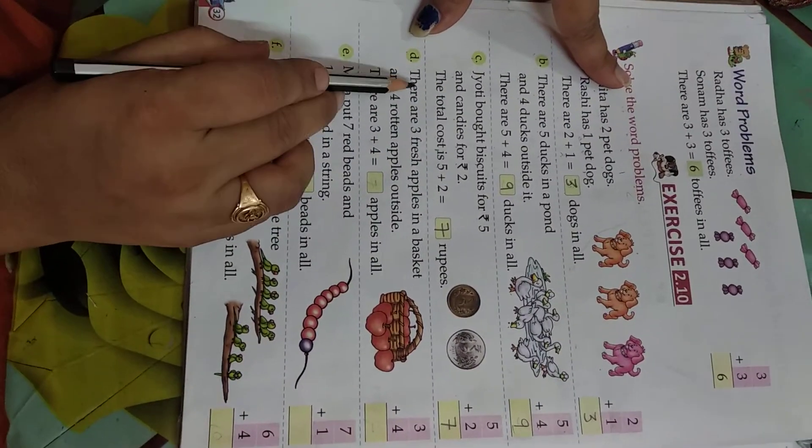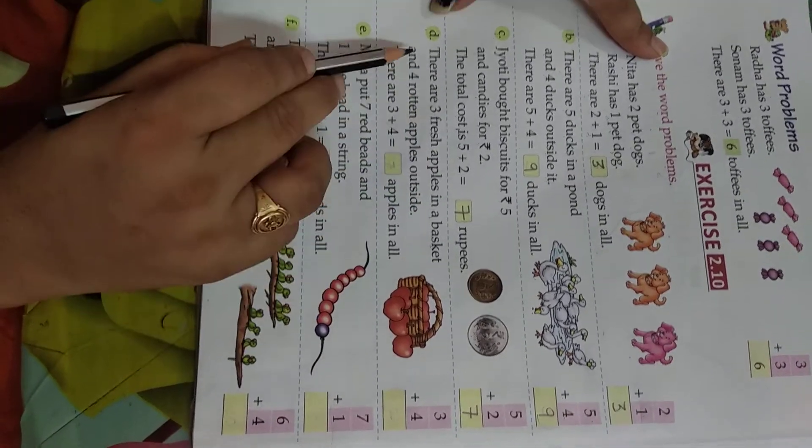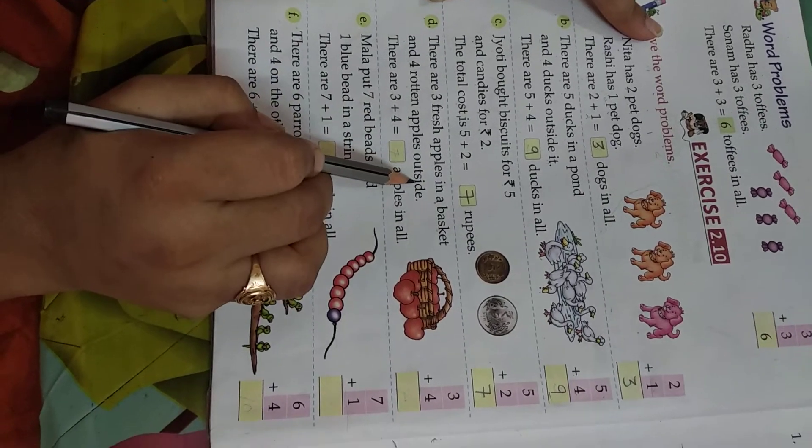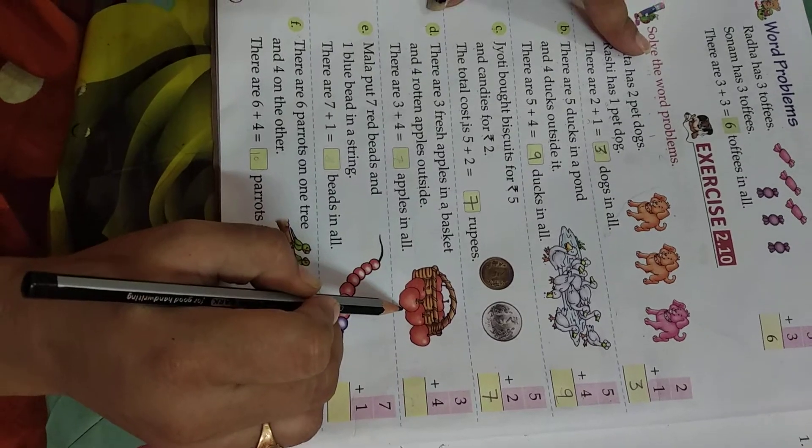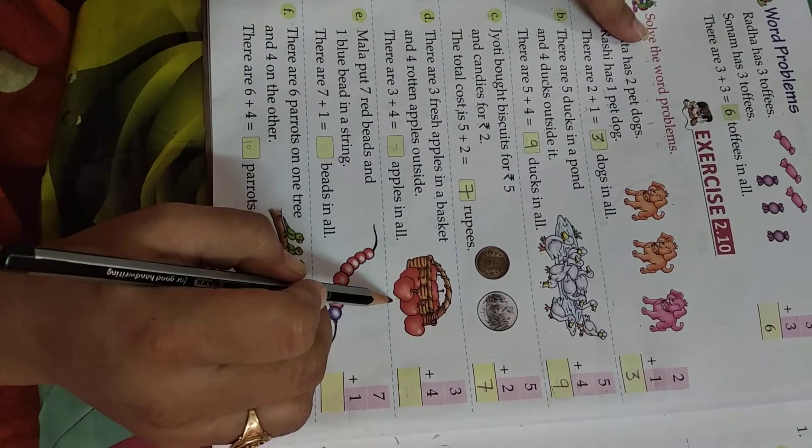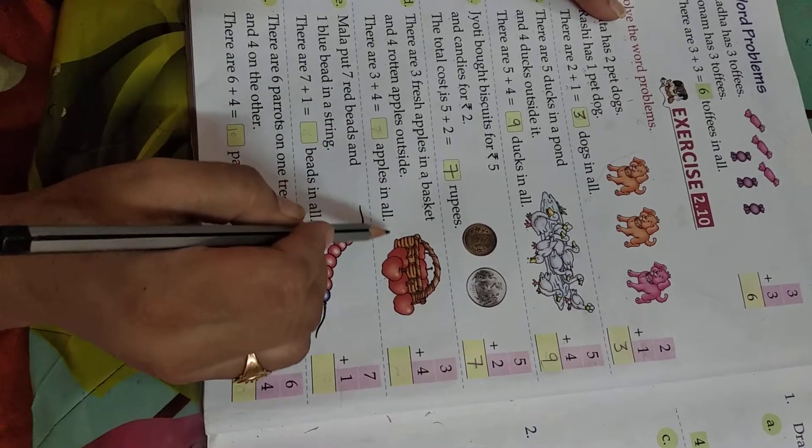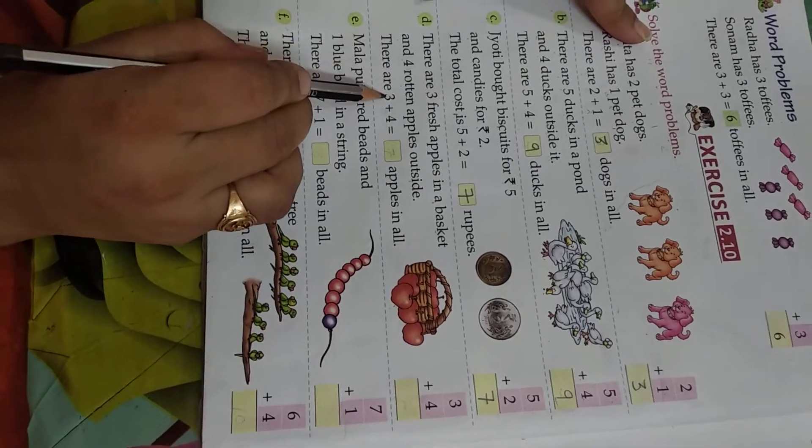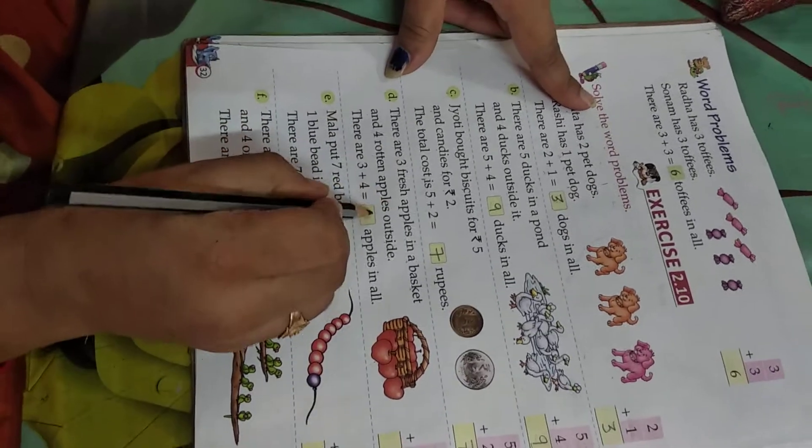Now, D. There are three fresh apples in a basket and four rotten apples outside. So we have to add them. How many apples are there? When we add them, then we get how many apples are in basket or outside. Three plus four is equal to seven.